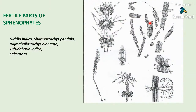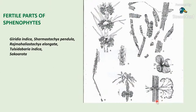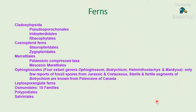There are fossil cones of equisitophytes in the form of Giridia, with spores appearing from nodes. Also Sarmastachys, Rajmahalistachys, Tulsidhabariya, and Saccharota.